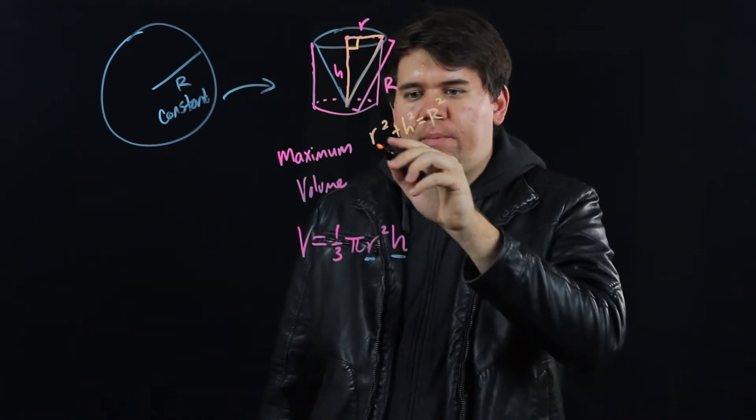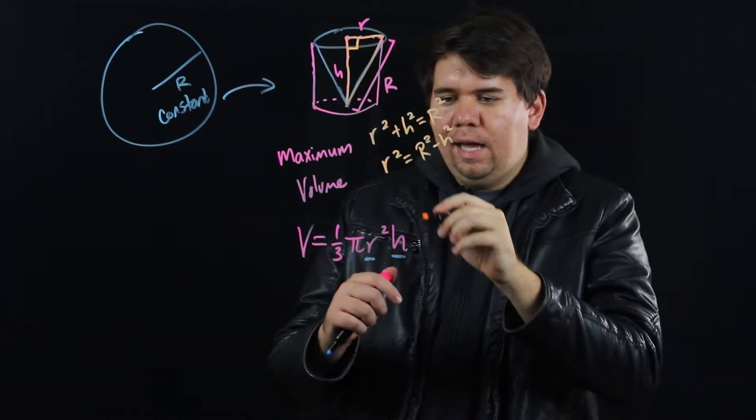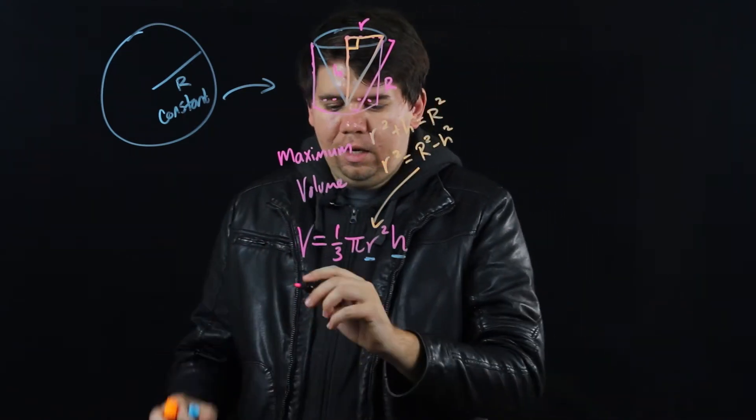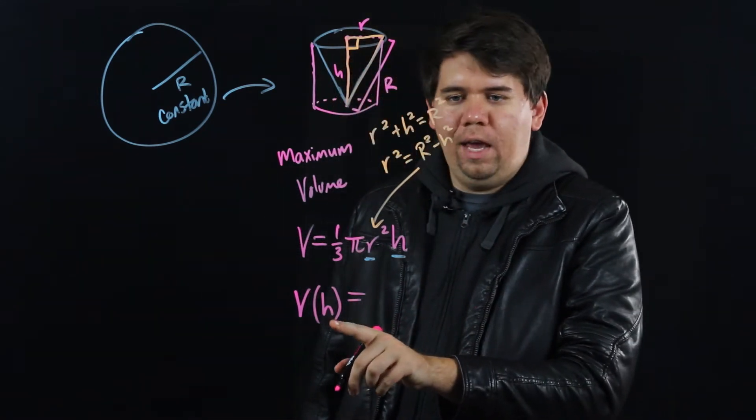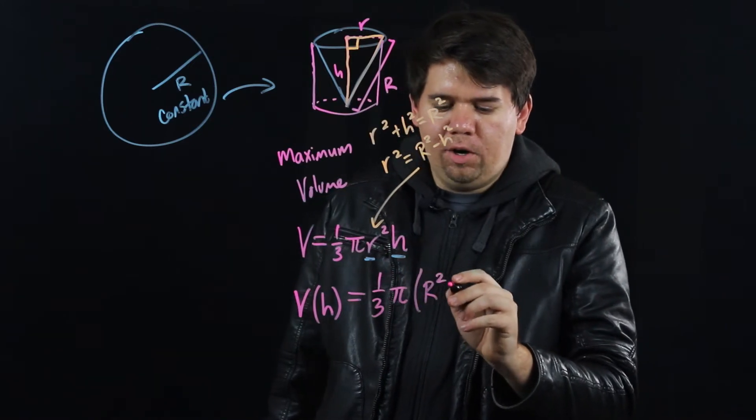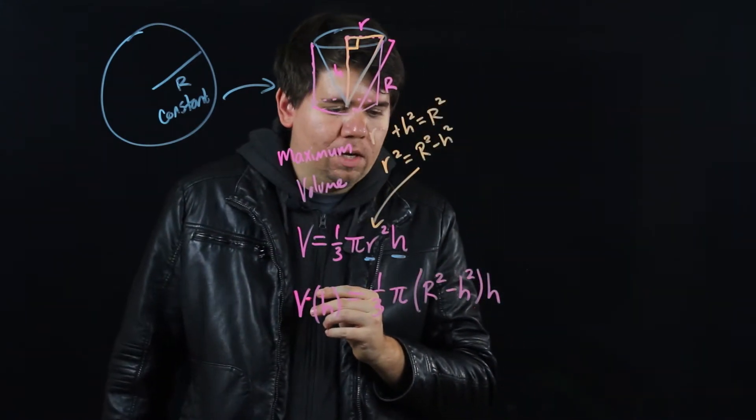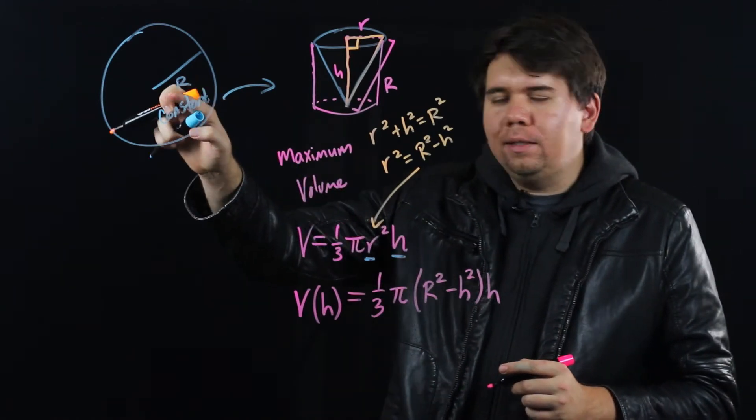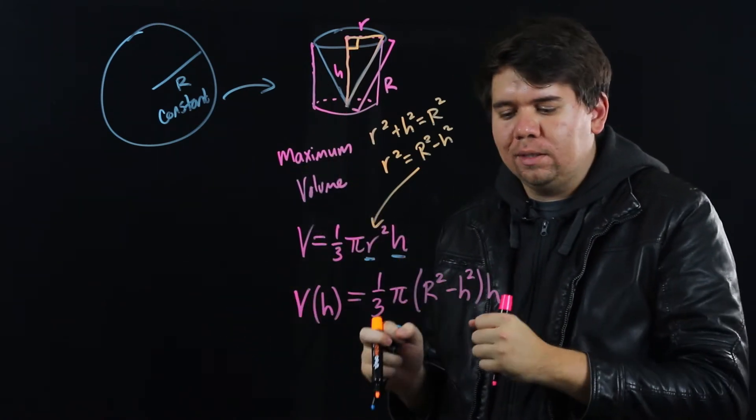That allows me to solve for one of these variables in terms of the other. I can solve for r squared, saying that r squared is just big R squared minus h squared. Then I can plug that in for little r squared, getting a function for volume that's only a function of h. It's one third pi times big R squared minus h squared times h. You might worry, don't we have that other variable big R? But that's not a variable, that's a constant. That's one thing that stays the same. It's whatever the size of the original disk was.